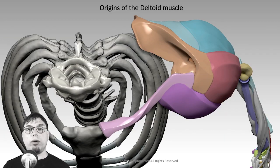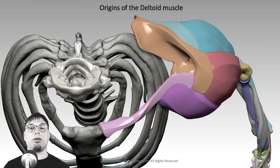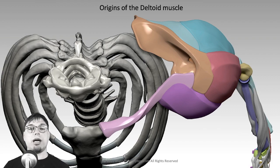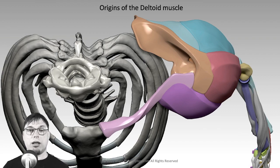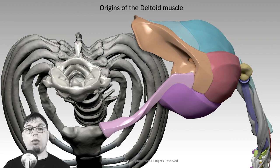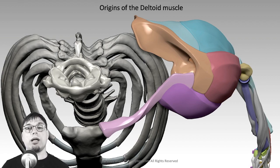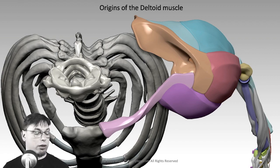Now let's talk about the origins of the deltoid muscle. There are multiple origins because it has three heads, so at least three origins. The origin is where the muscle begins; the insertion is where the muscle ends. The origin is typically the least-moving or more massive attachment, while the insertion is the most-moving part.